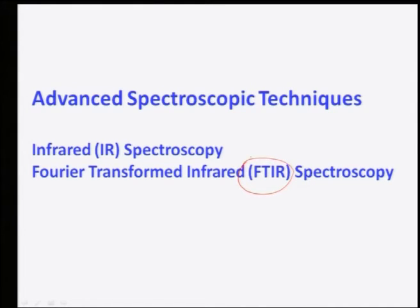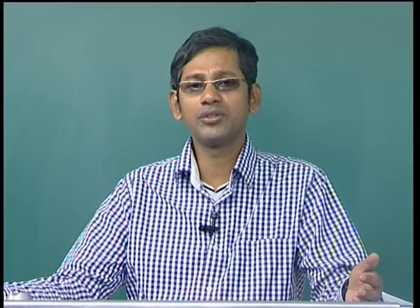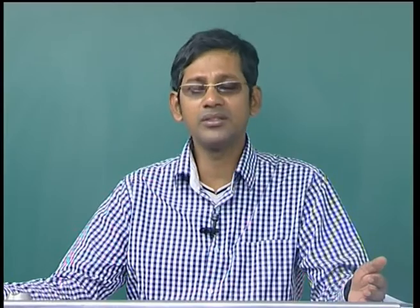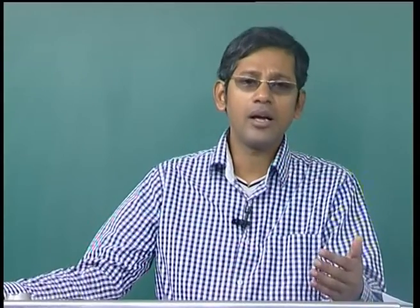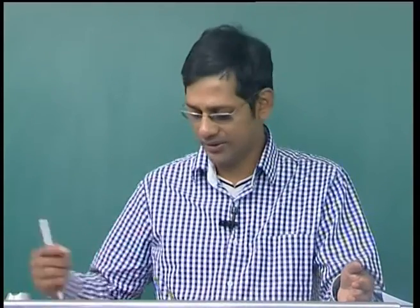The full form of FTIR is Fourier Transform Infrared Spectroscopy. It is an infrared spectroscopy technique where the information obtained from the machine is plotted in Fourier space instead of real space — Fourier space is nothing but the wavenumber space. This spectroscopic technique deals with the infrared region of the electromagnetic spectrum.